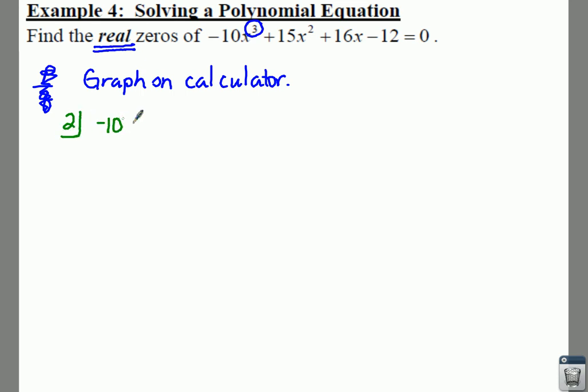We need to show the algebra behind it, so let's use two as our number we put into the box. We're going to say -10, 15, 16, and -12. So we should get a remainder of zero, that's correct. You bring down the -10, you get -20, here's a -5, -10, when you multiply that by 2 you get a 6, and then you get a 12 right here, so you get a zero.